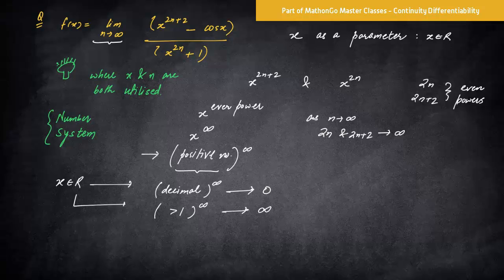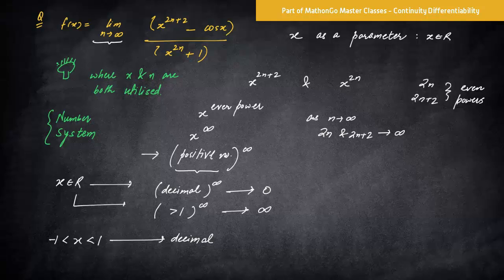Now we know that x is basically, I can say mod x here, or let's not even, okay, I'll come to that. So if I say x lies between minus 1 to 1, that is decimal, this is the meaning of decimal. This will lead to answer 0.